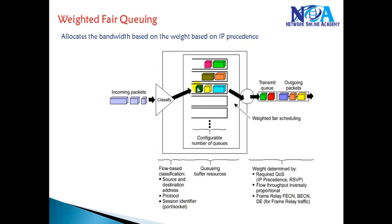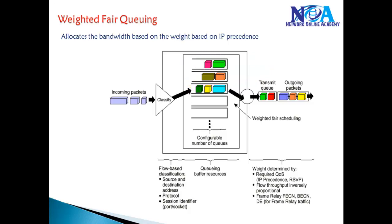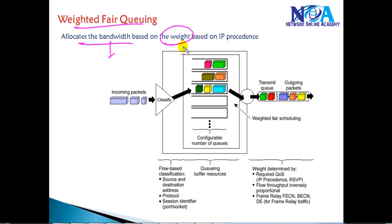The next concept is weighted fair queuing, which is the enhanced version of fair queuing. It assigns a weight to each flow, allowing specific flows to forward more packets compared to others. The bandwidth is allocated completely based on weight, which is derived from IP precedence values or reservations made by RSVP, a legacy protocol. Based on that, the weight is assigned.